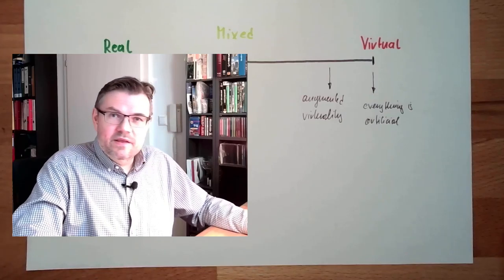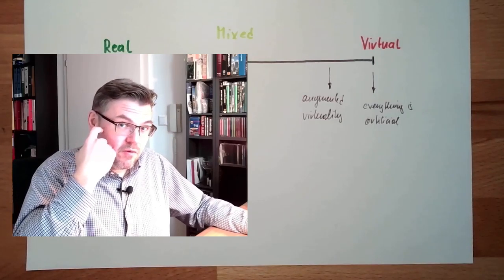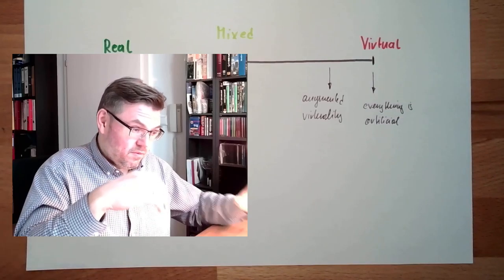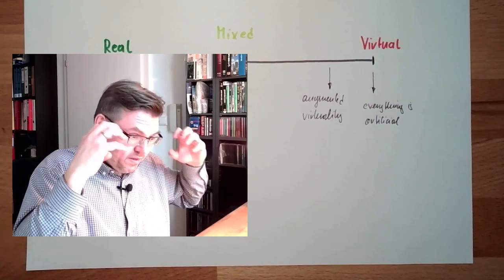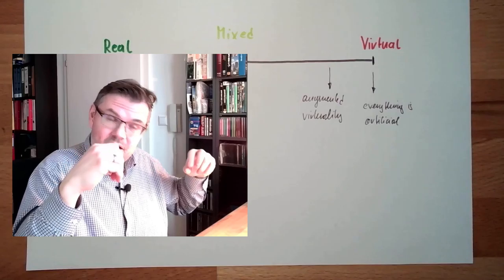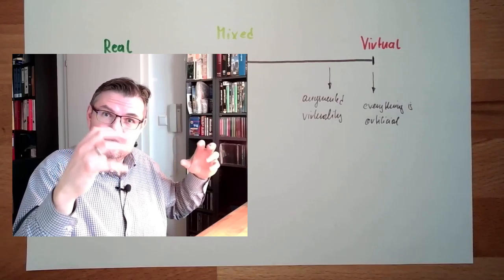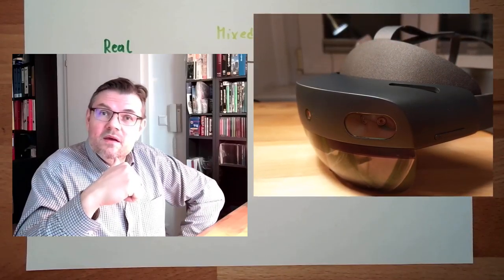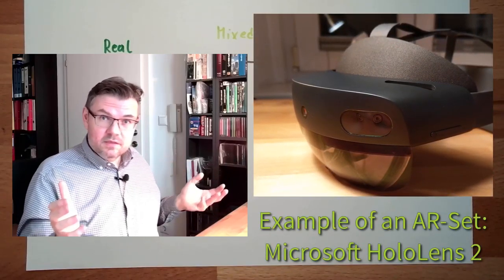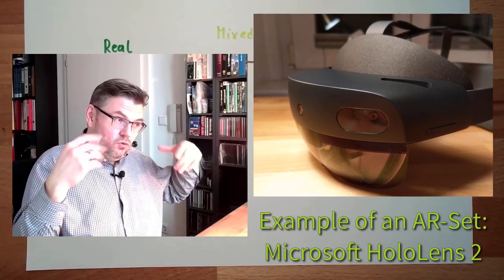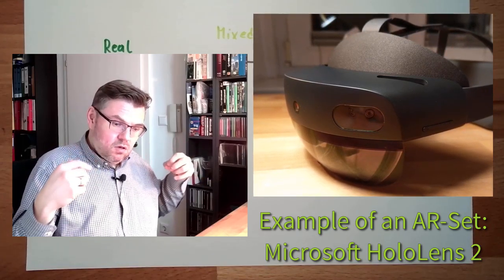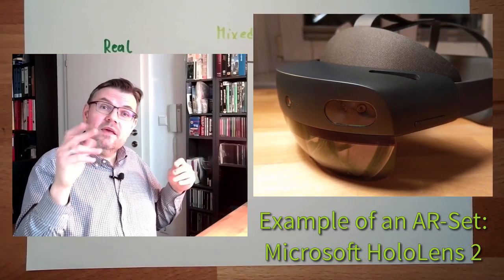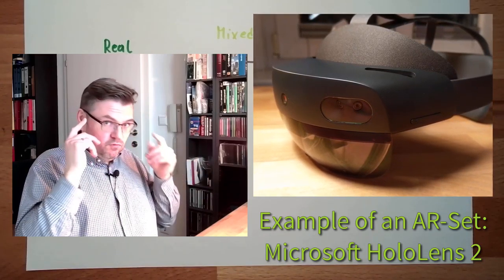So augmented reality requires quite a lot of stuff. The augmented reality set, ARS, or augmented reality system also needs to track where it is. Needs to somehow know its position and so on and calculate, if it's a visual thing, calculate how those things might look like.